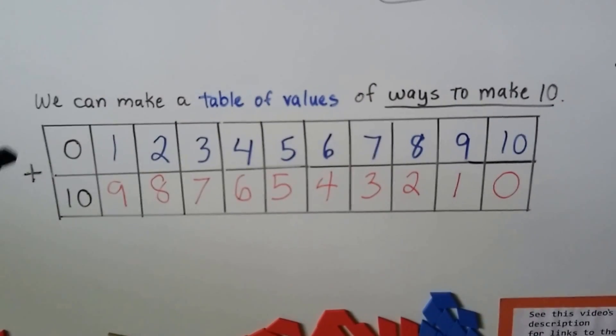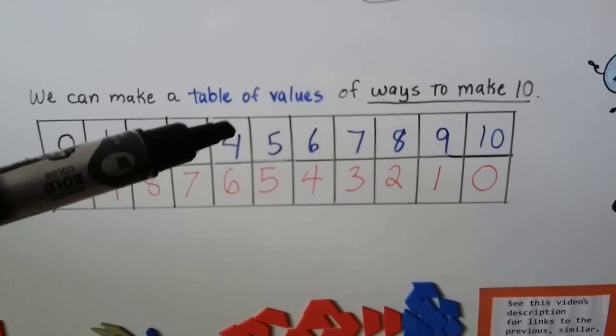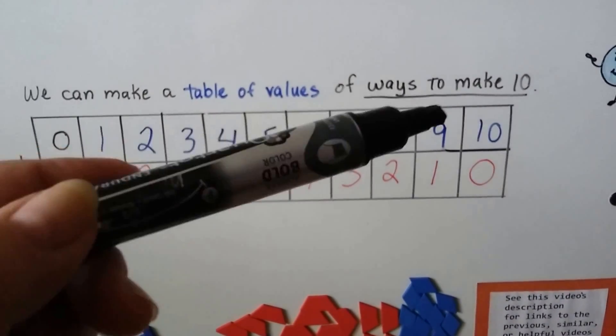Do you see what's happening? As this top part of the table is going 0, 1, 2, 3, 4, 5, 6, 7, 8, 9, 10...